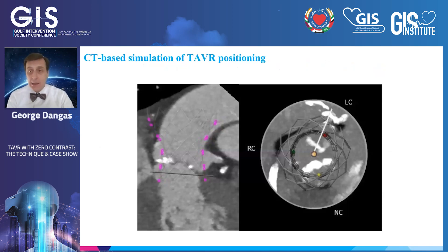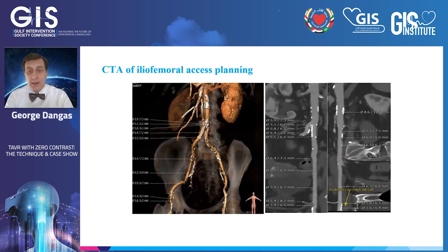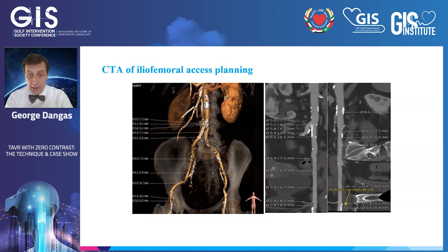First of all, we start by meticulous planning of the procedure. We must have a limited contrast CTA in order to do our measurements well before the procedure, and have very good planning as well as a very detailed consent process. We also have to be very clear and secure about high-quality access, which would allow ultrasound-guided access at the common femoral artery.